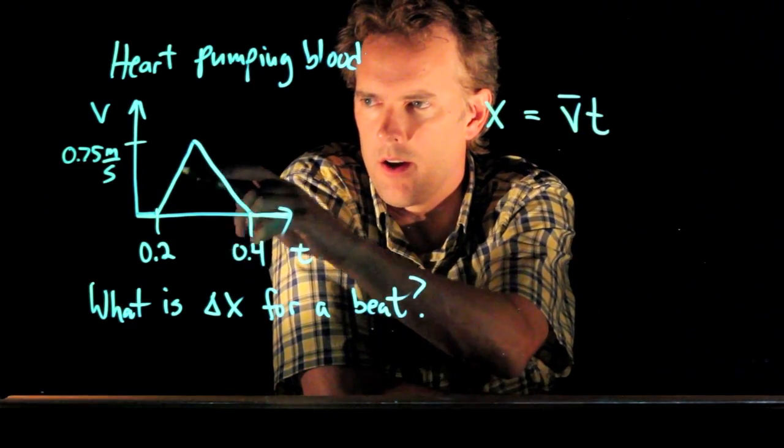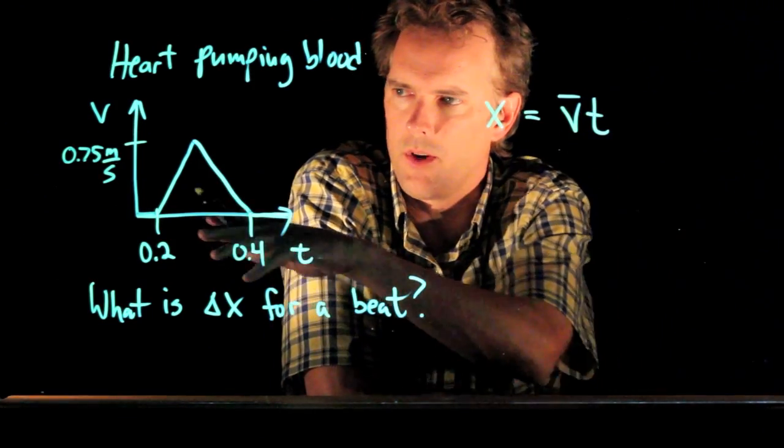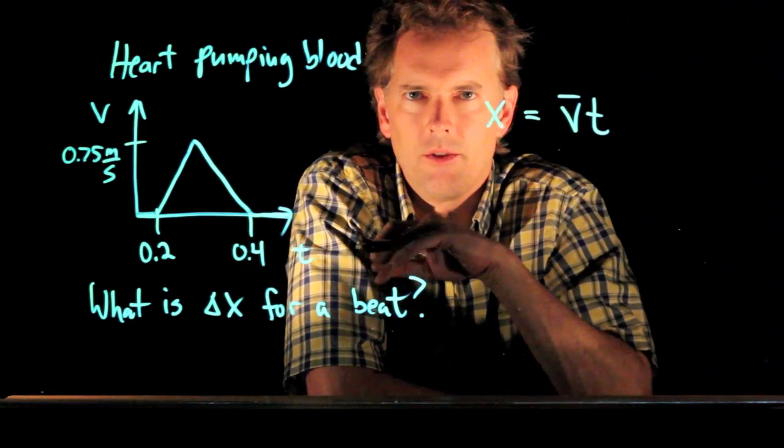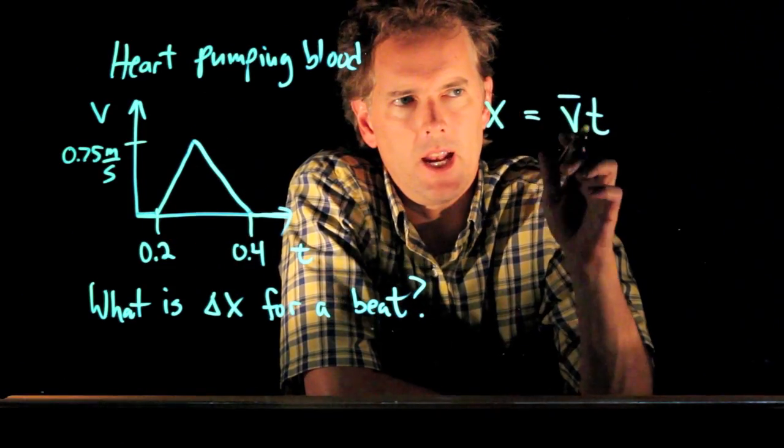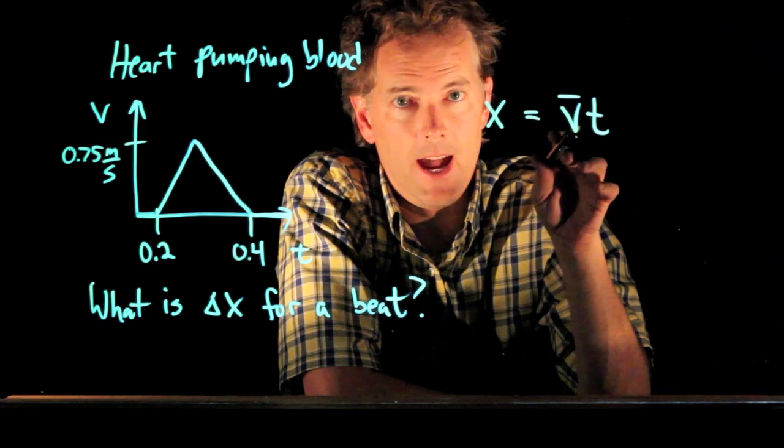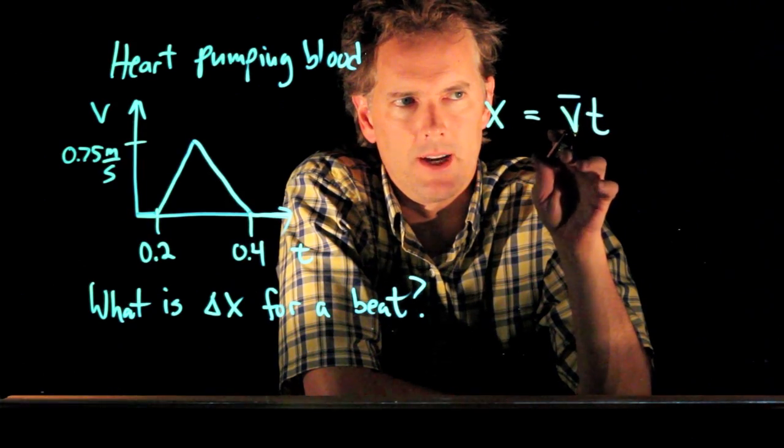And if I have areas of constant acceleration where v is increasing linearly, then I can just say exactly that: x equals v bar times t.